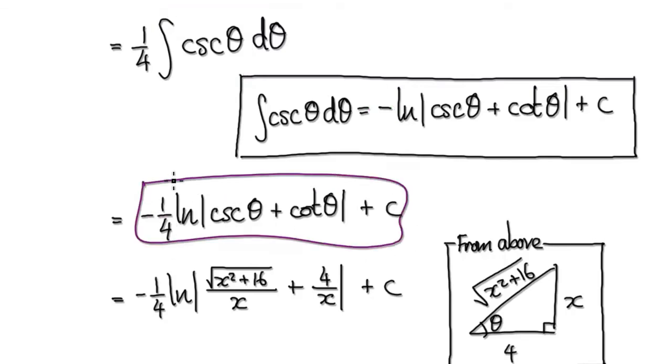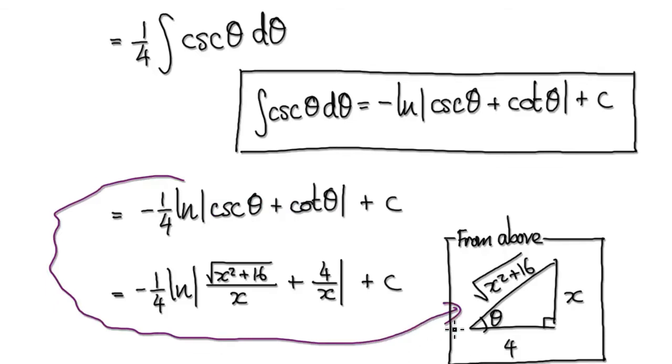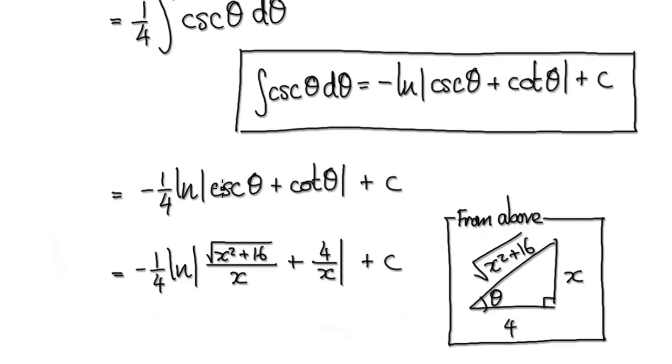And then now, this is our answer. But we don't want the answer in terms of theta because you've got theta here and theta here. So going back to the original diagram, we can translate cosecant. Cosecant is this thing here, so that would be hypotenuse over opposite. We can translate this: cotangent would be this, so it would be 4 over x. So this is your final answer.